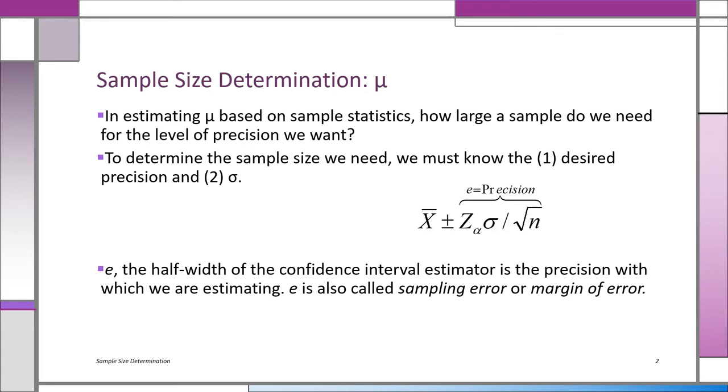One thing we know is that as n goes up, the size of the interval shrinks by a factor of the square root of n. So if we know beforehand what our precision is, which we've been calling margin of error, if we know beforehand, before we start, what we want the half-width of the confidence interval to be, or at least what it should be at a maximum, not more than, then we can pretty well figure everything else out.